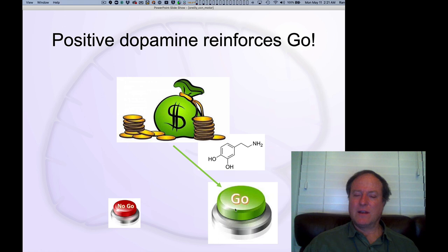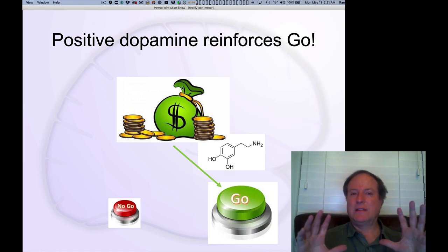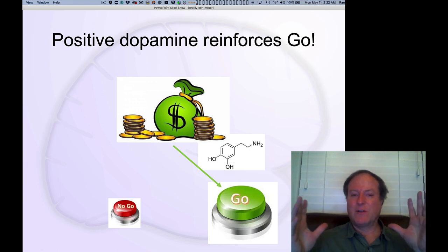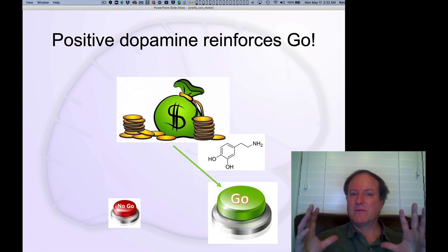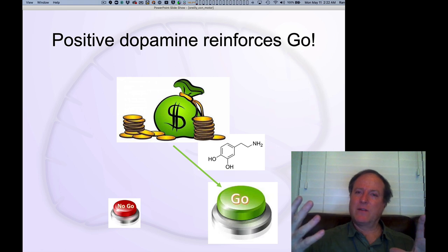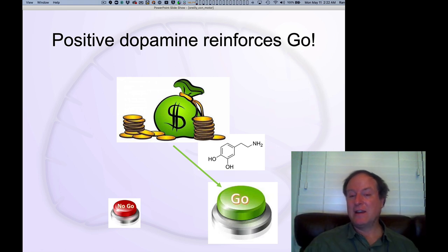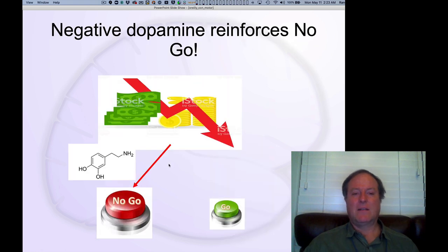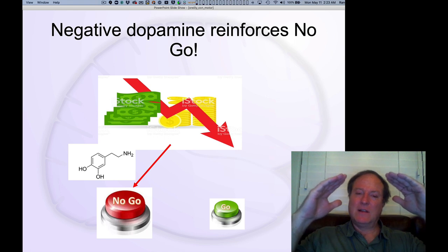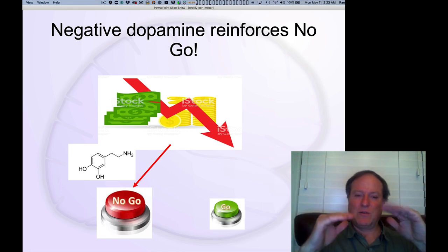The dopamine system is wired to reinforce a go decision. If you get a positive reward signal encoded in dopamine after having made a go decision, that reinforces making the same decision again in the future. Likewise, a negative dopamine signal — a decrease in dopamine below baseline — reinforces the complementary no-go pathway. So dopamine can go both ways: an increase reinforces go, while a decrease below baseline reinforces no-go.